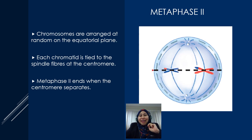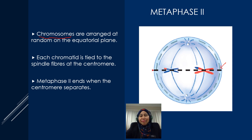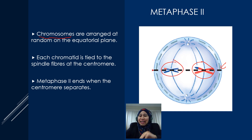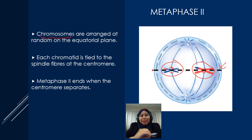In metaphase 2, the chromosomes are arranged at random on the equatorial plane. Be careful — in metaphase 1 it was homologous chromosomes aligned at the equatorial plane, but in metaphase 2 it is individual chromosomes aligned at the equatorial plane. Each chromatid is tied to the spindle fiber at the centromere. Metaphase 2 ends when the centromere starts to separate.